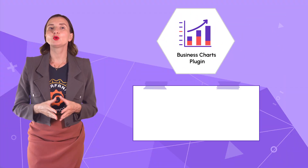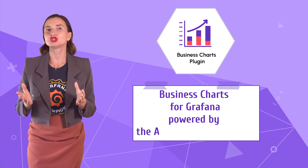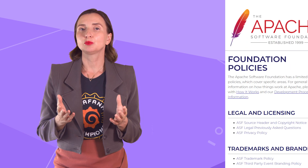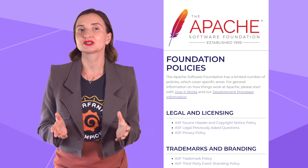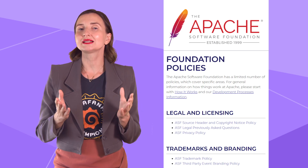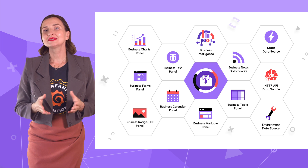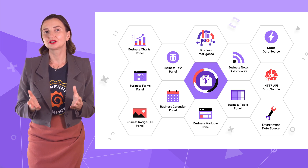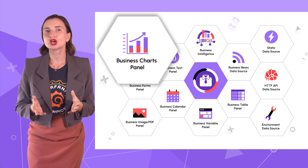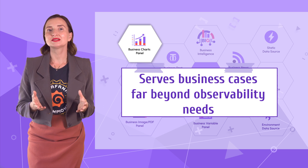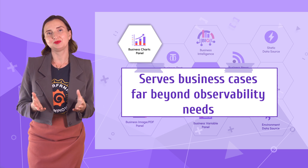Apache eCharts should now be called Business Charts for Grafana, powered by the Apache eCharts library — or Business Charts for short. Rebranding can sometimes be confusing, but we take complying with the Apache Foundation policies seriously. The requirement to have a different name was a little push we were happy about — it helped us build a roadmap for the next few months. Now we are all set to develop a comprehensive business suite for Grafana, in which the business charts will have an honorable place. The new name emphasizes that the plugin serves various business cases far beyond observability needs.